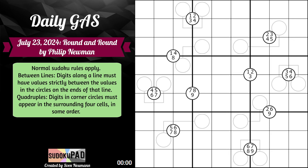Normal Sudoku rules apply. Between lines: digits along a line must have values strictly between the values in the circles on the end of that line. Quadruples: digits in corner circles must appear in the surrounding four cells in some order.